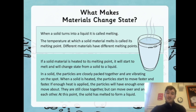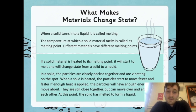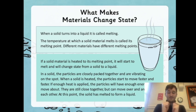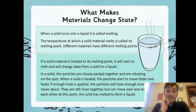When a solid turns into a liquid it is called melting. The temperature at which a material melts is called its melting point, and different materials have different melting points. If a solid material is heated to its melting point it will start to melt and change state from a solid to a liquid. In a solid the particles are closely packed together and vibrating on the spot, but when heated the particles start to move faster and faster, and if enough heat is applied the particles have enough energy to move about — still quite close together but able to move over and around each other. At this point the solid has melted to form a liquid.